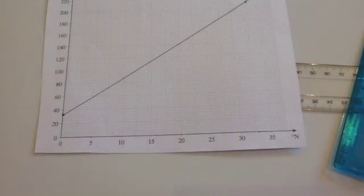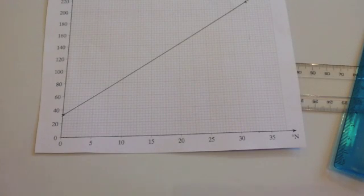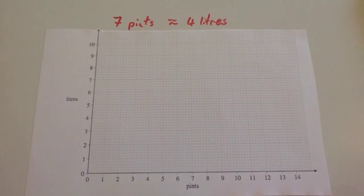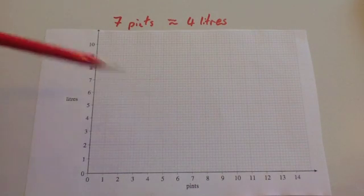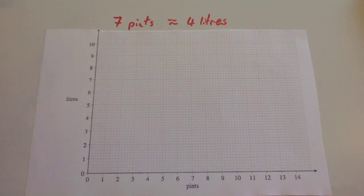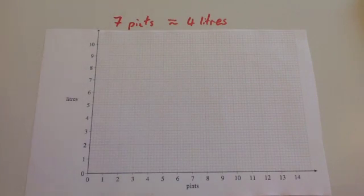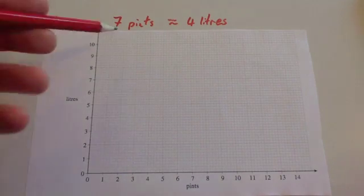Now let's look at the other type of conversion graph where they just tell you the conversion fact. This time we're going to draw a conversion graph to convert from pints to liters. The question tells us that 7 pints is approximately 4 liters. So first of all, let's plot that point.